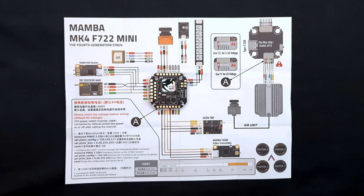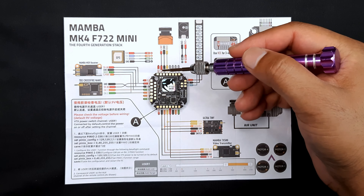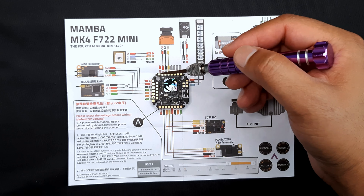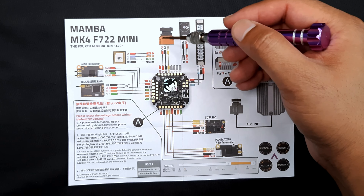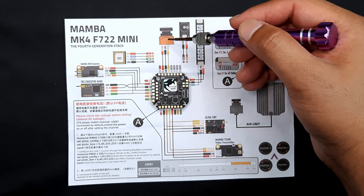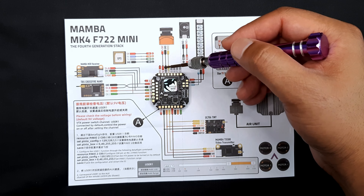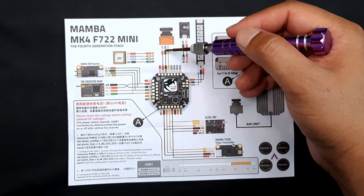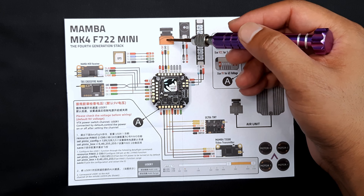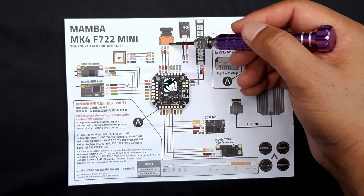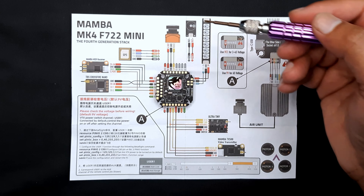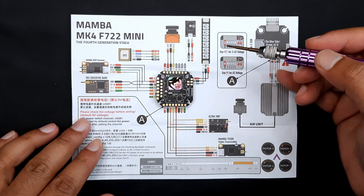In the diagram we can see the connections for the FPV camera. This is the 5 volt connection, this is the ground, and this is for the video connection.